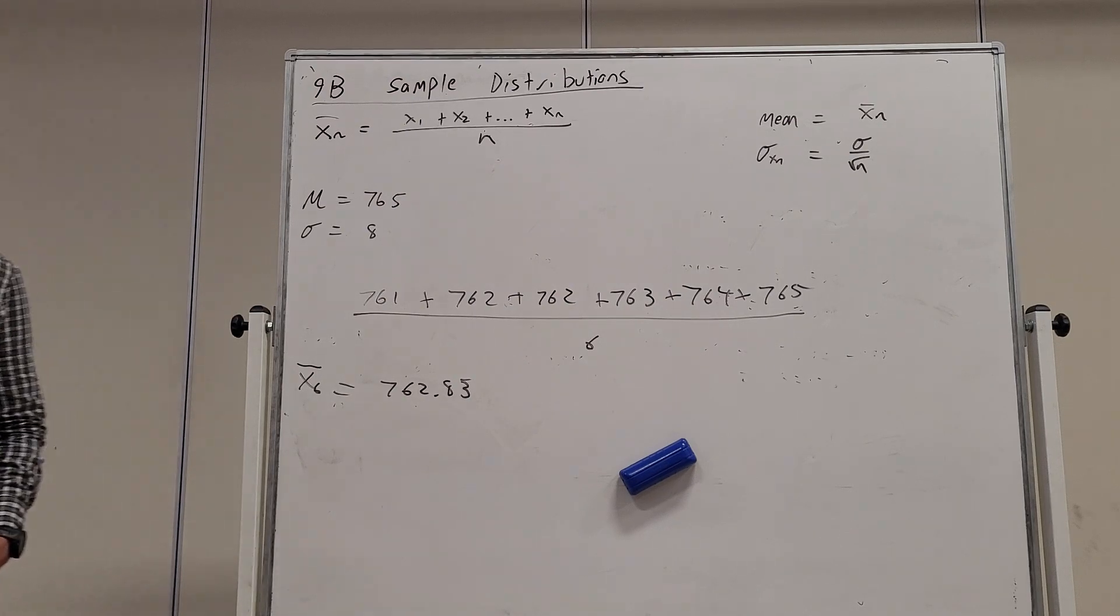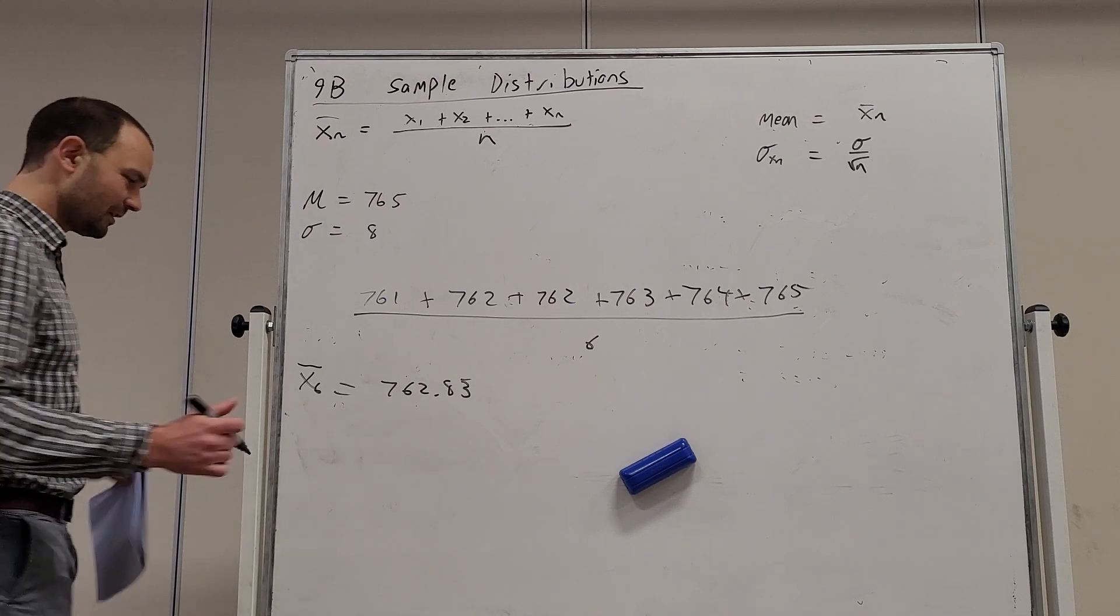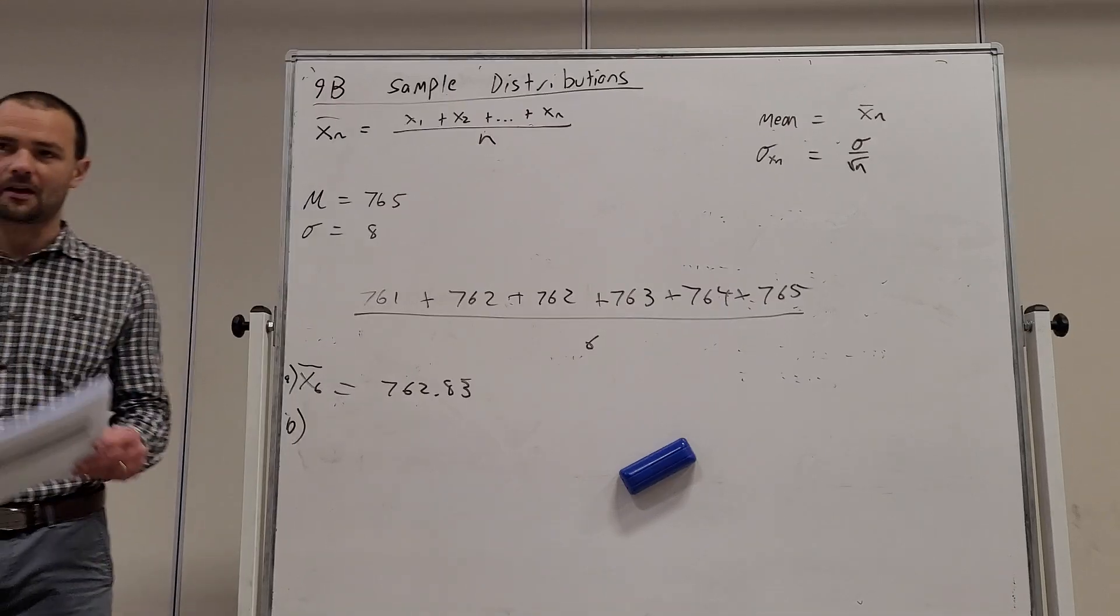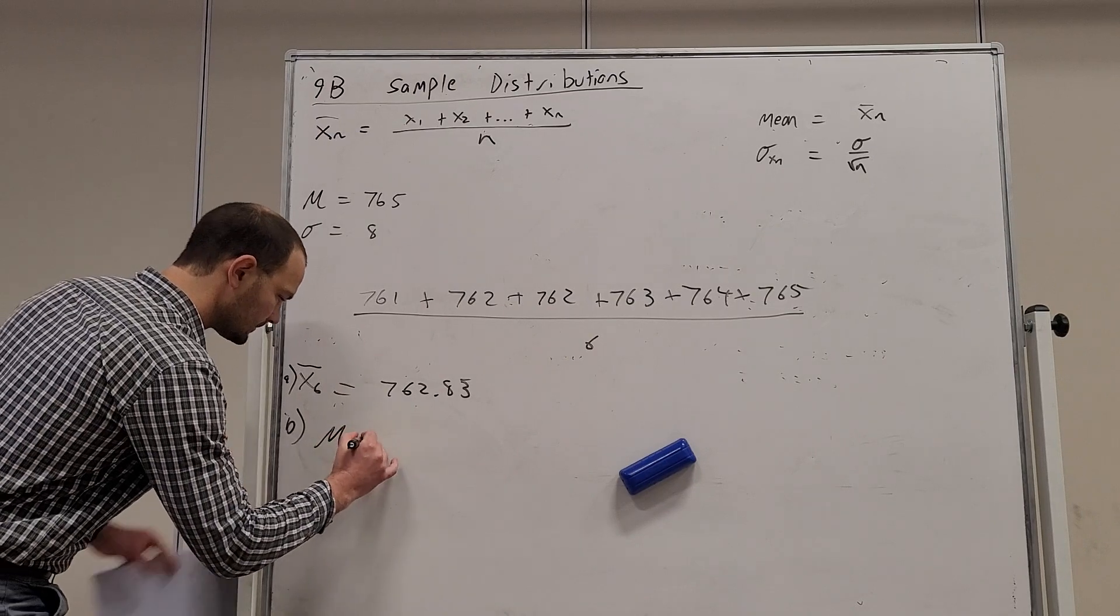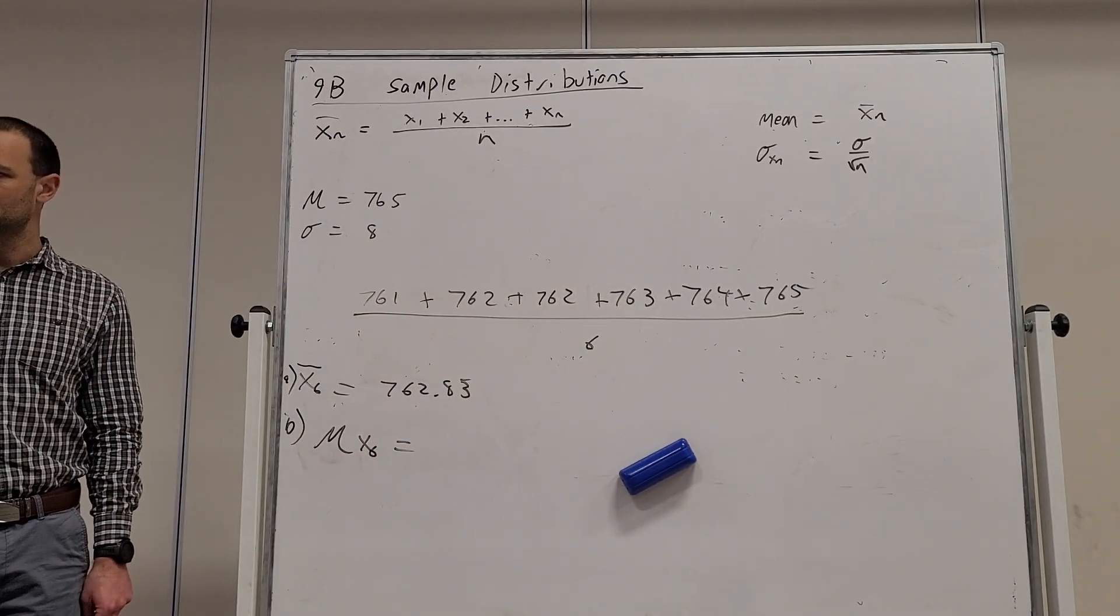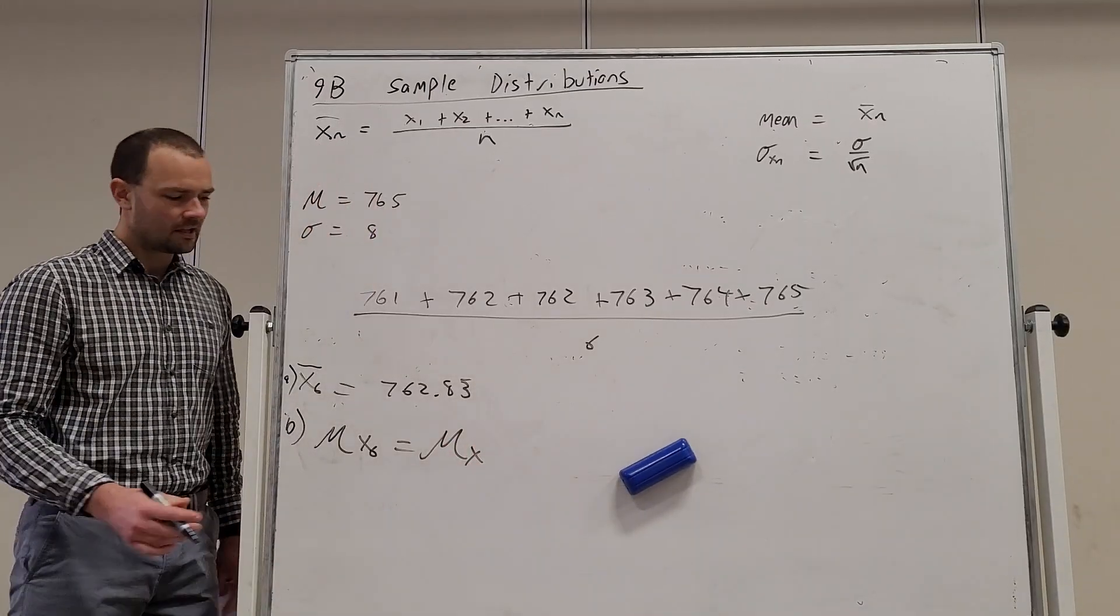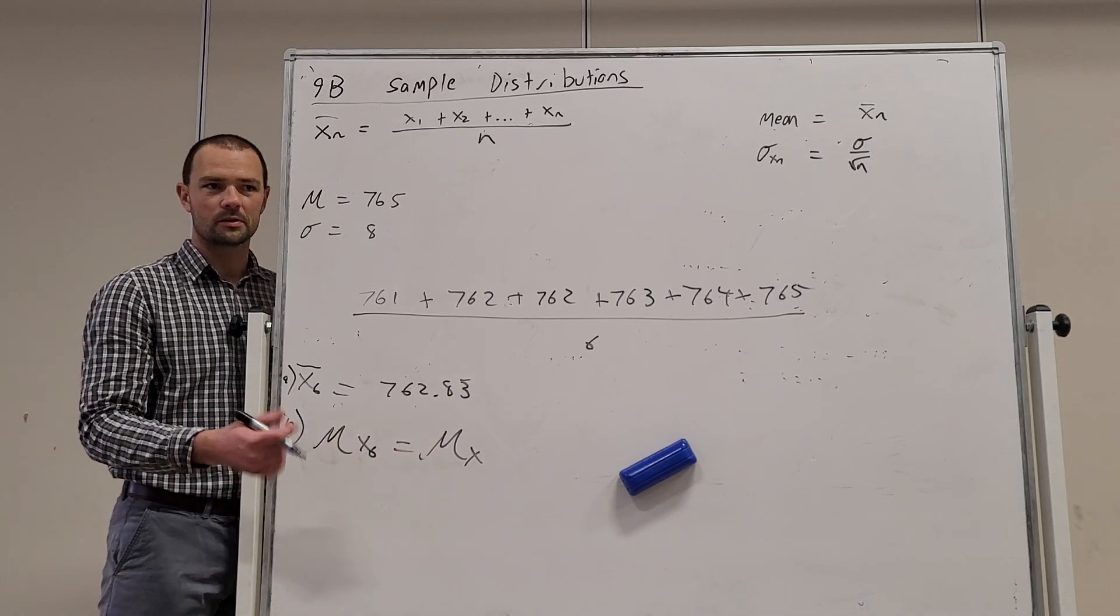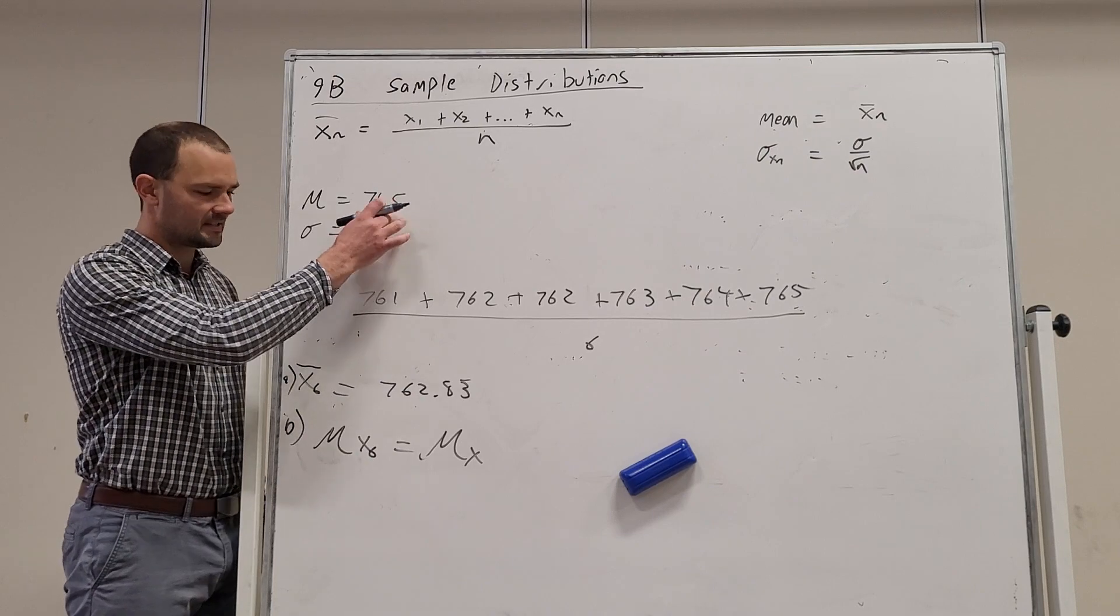Part B, it should read, find the mean and standard deviation of x6. So the mean of x6 is always equal to the mean of x, if it's known. So what takes precedence? The known mean. The known mean is 765.